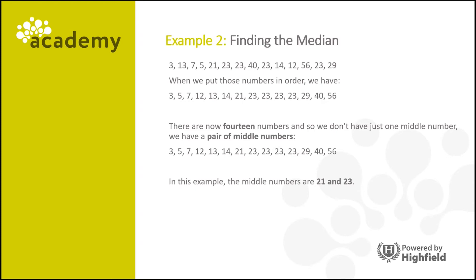In this case, the numbers are 21 and 23. And now to work out the median, we need to add those two values together and divide them by 2. So 21 plus 23 is 44, divide that by 2 and we have 22. So in this case, the median is 22.